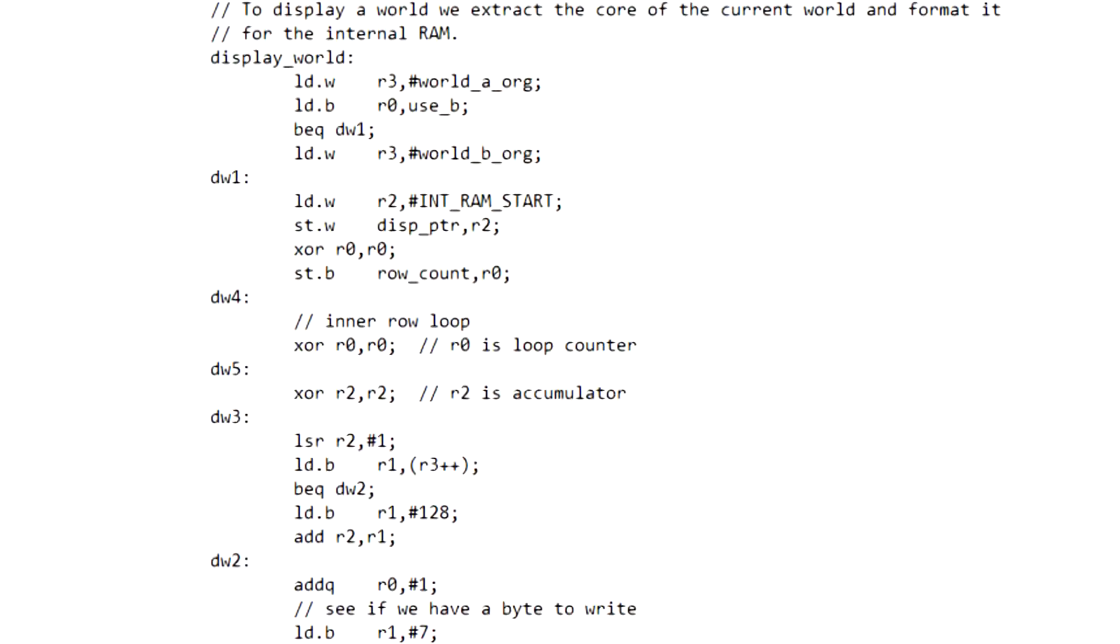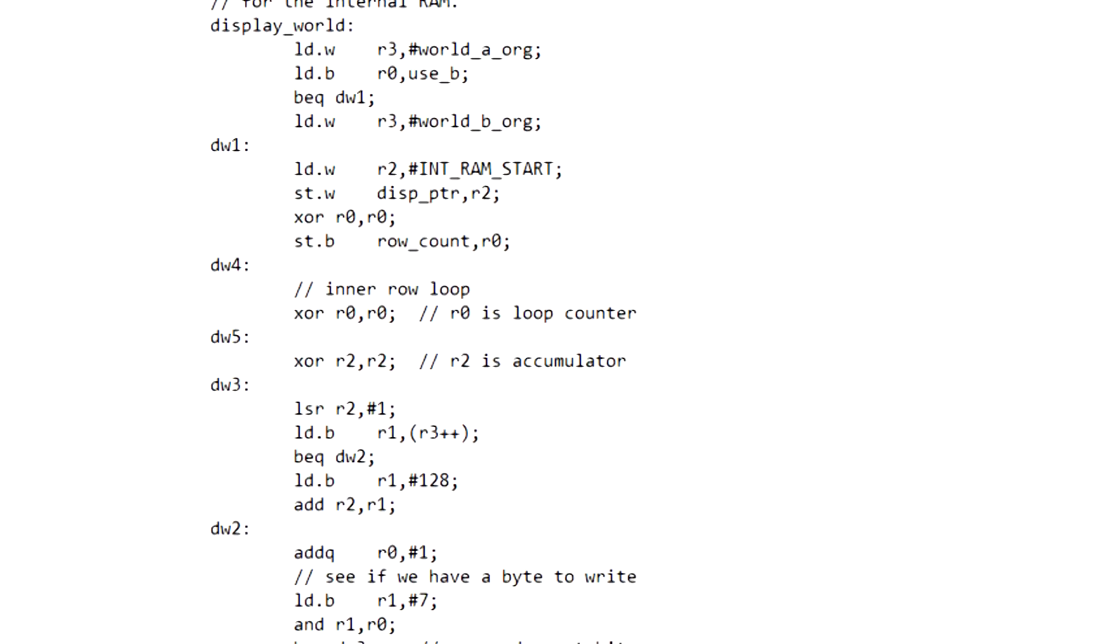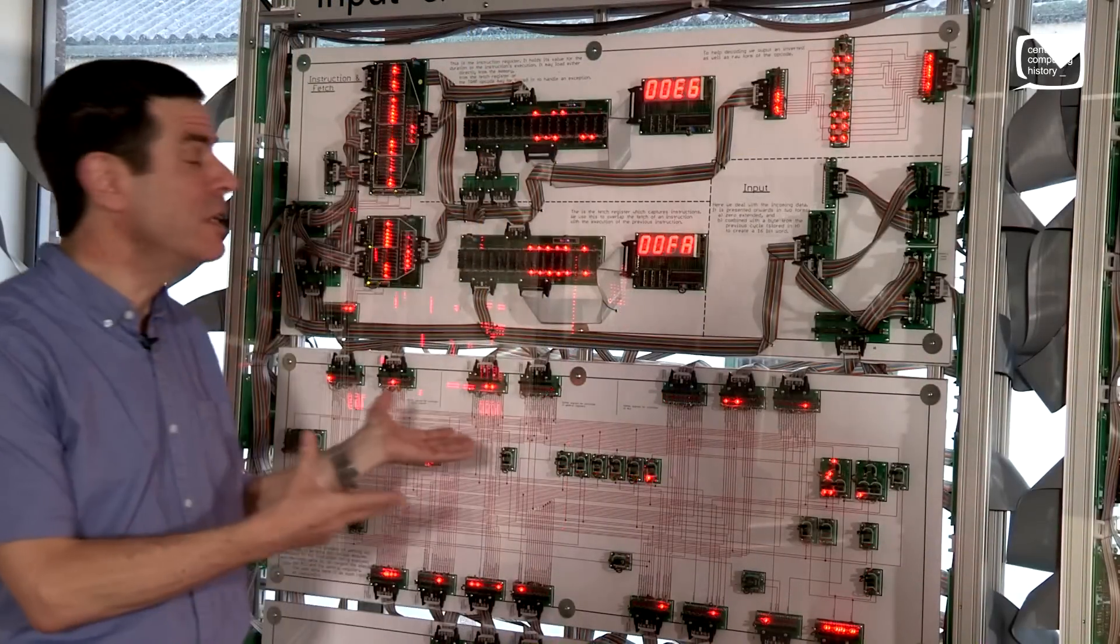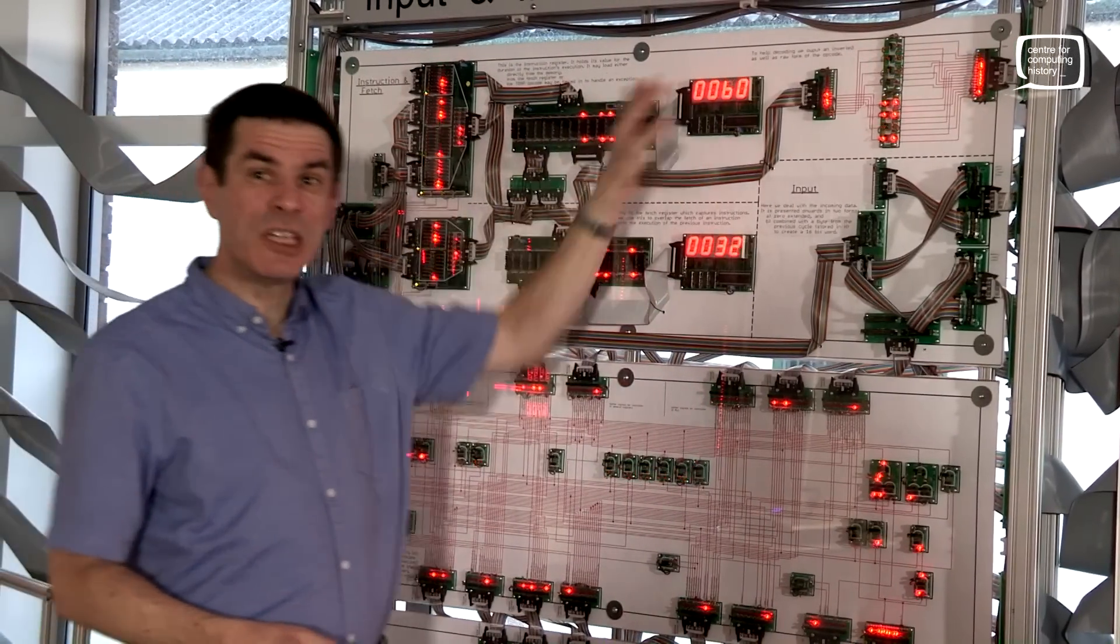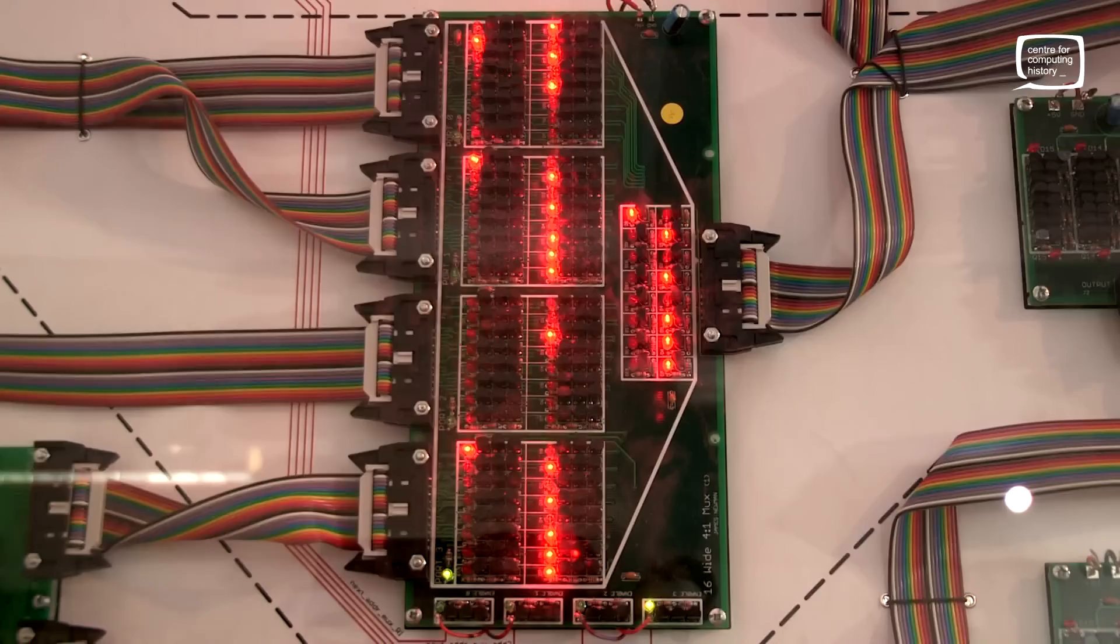Programs are a sequence of instructions, and instructions arrive into this particular processor here in the instruction register. And when it arrives, it's really just a number, a set of bits.